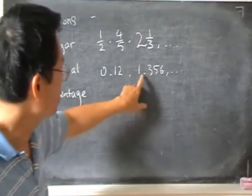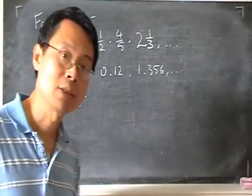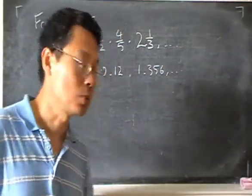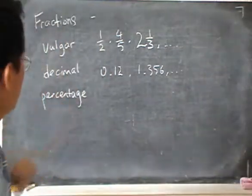And in a decimal for example, 1.356 is a number that's between say 1 and 2, but it's not 1, it's not 2, it's not a whole number.